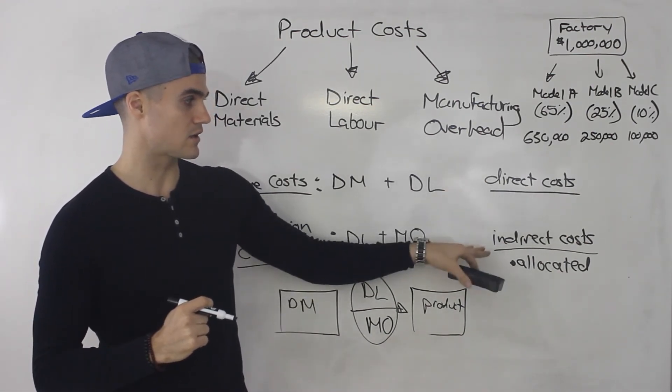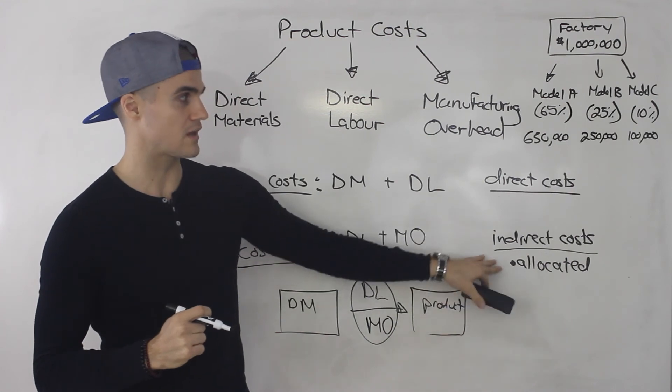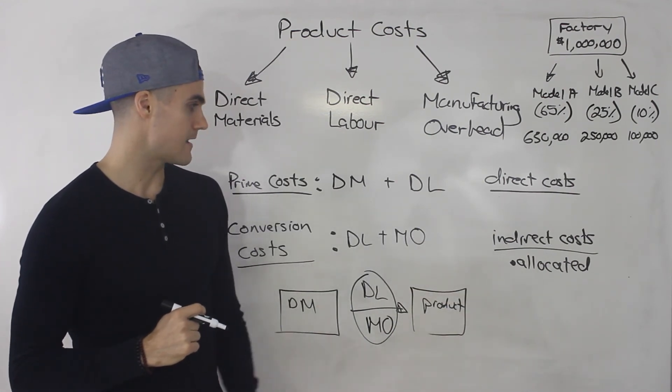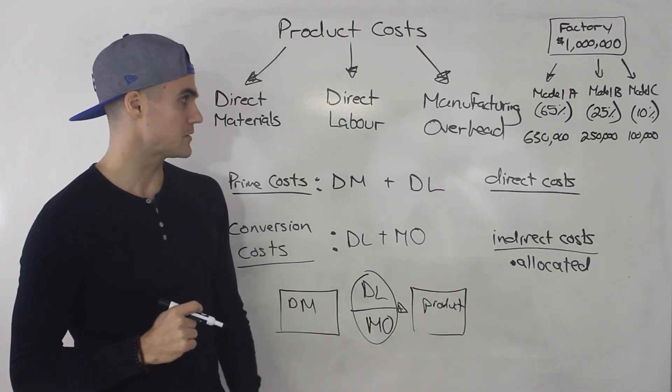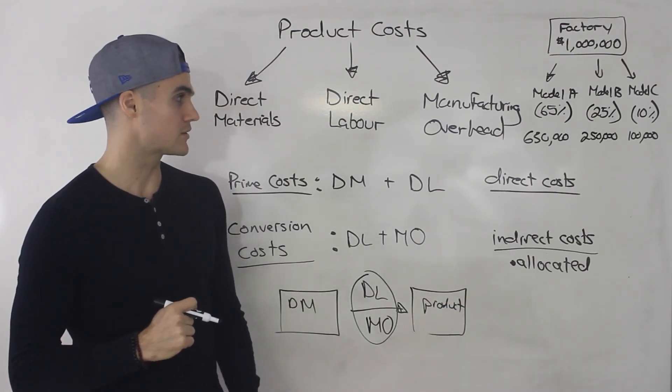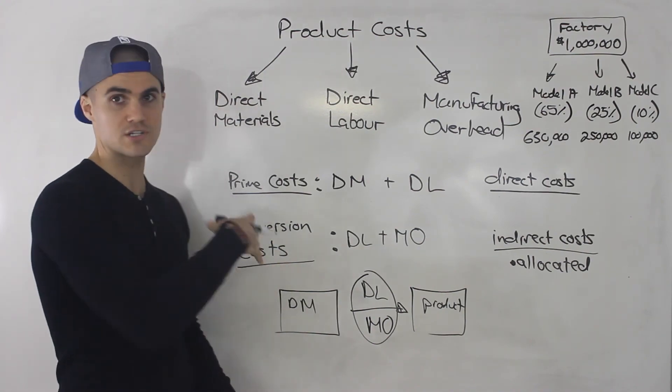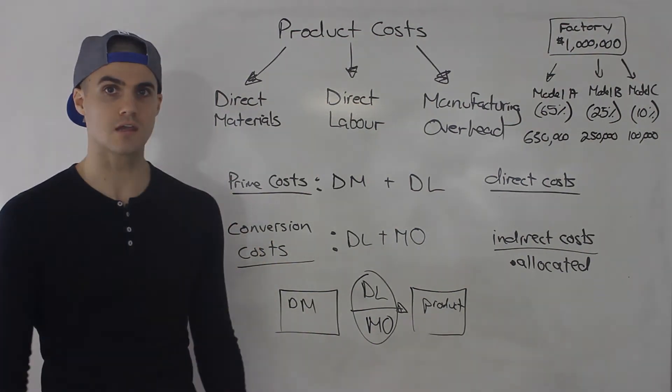So: direct costs, then you have indirect costs — they have to be allocated. That's pretty much it. That's what I wanted to go over in this video — just some definitions that you might see come up in the chapter.